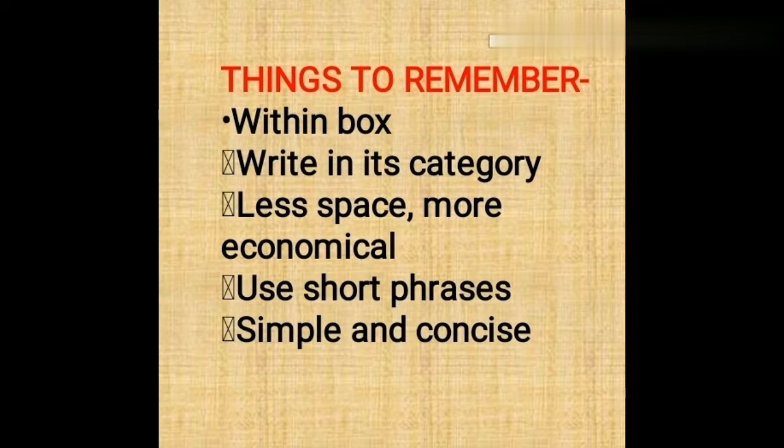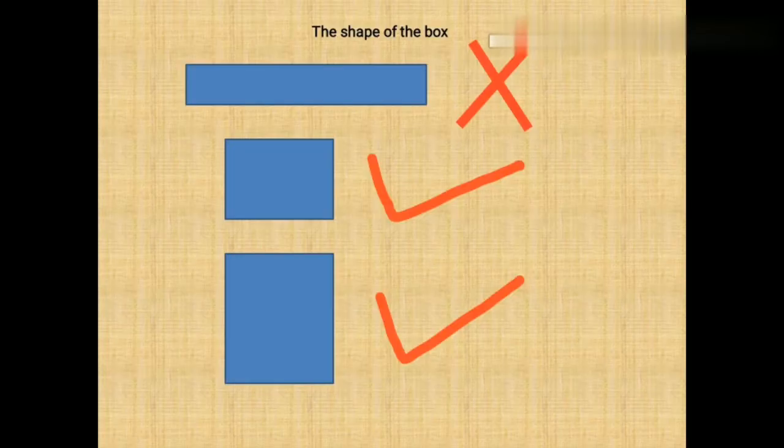Let me show you the first mistake that students make. The first box type is not at all accepted in CBSE for advertisements. The second and third ones are narrow — this is how you see advertisements in the newspaper. So we are going to follow this format, and please students, rectify your mistake.